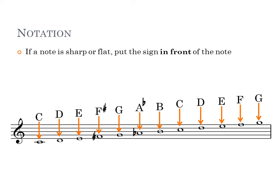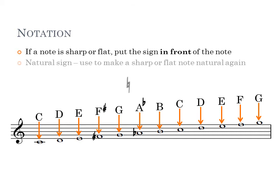We might come across a situation where we've had a flat or a sharp note and we want to play the natural version of that same note. If that happens within the same bar, we need to use a natural sign to make the note natural again. It looks like this, and it simply removes the sharp or the flat. It's called a natural sign — put it in front of the note and it becomes a natural note again.